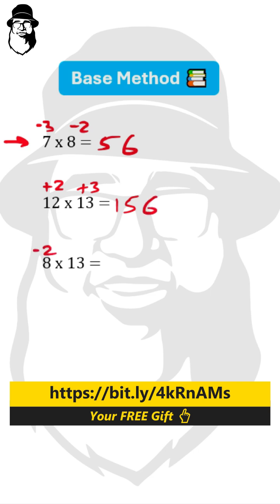But when one is below the base—8 is 2 below 10—and one is above the base—13 is 3 above 10—we do the first part the same: 13 minus 2 is 11, or we can do 8 plus 3, also 11. But for the second part, our answer is negative: minus 2 times plus 3 is minus 6. We write bar 6 here.